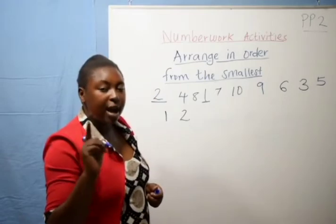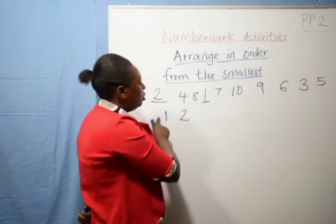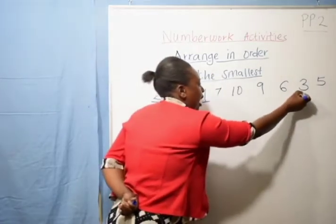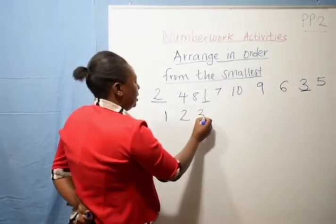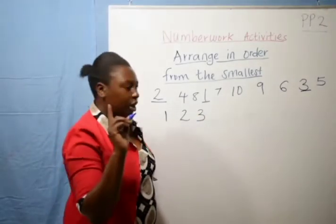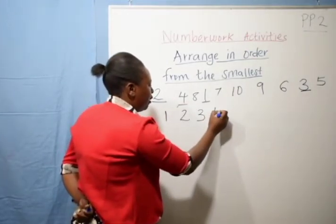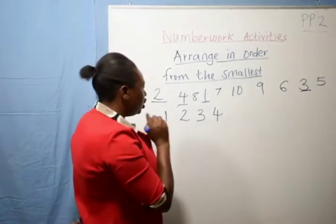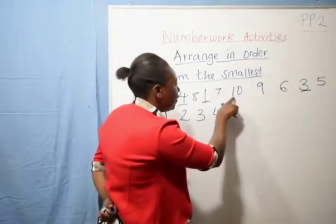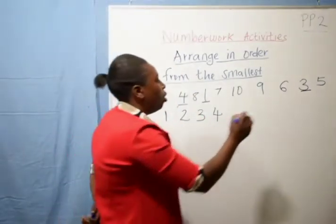Which is the next number after one? It is two — you draw a line on two so we don't repeat that number. After two, which is the next number? After three, yes, we have number three — we write it there. After three, the next number is four — you write four. Then we check our remaining numbers: eight, seven, ten, nine, six, and five. Which number is next?